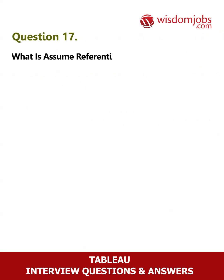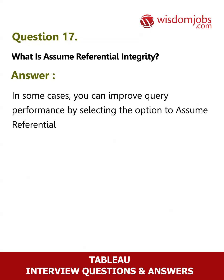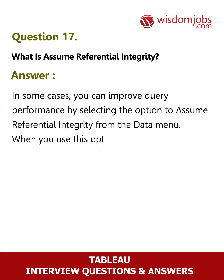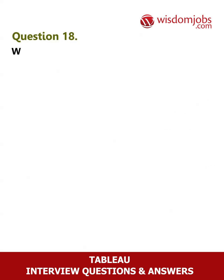Question 17: What is Assume Referential Integrity? In some cases, you can improve query performance by selecting the option to 'Assume Referential Integrity' from the Data menu. When you use this option, Tableau will include the join table in the query only if it is specifically referenced by fields in the view.